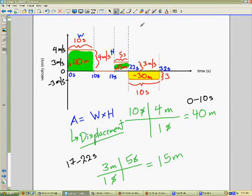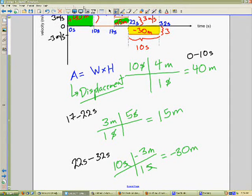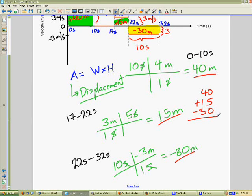So how do I find the total displacement if I know all the displacements for the little time intervals? This one was 40 from 0 to 10, 0 from 10 to 17, positive 15 from 17 to 22 seconds, and negative 30 from 22 to 32 seconds. Well, all I have to do is add them up. So here, I'm going to have 40 plus 15 minus 30. Then, I'm left with 25. So my total displacement for this movement is positive 25 meters.